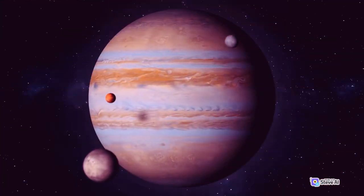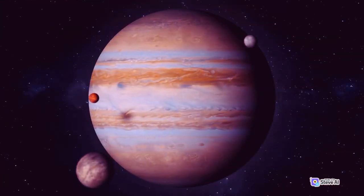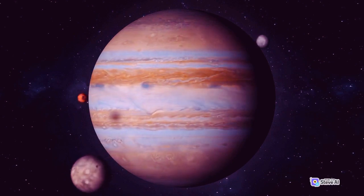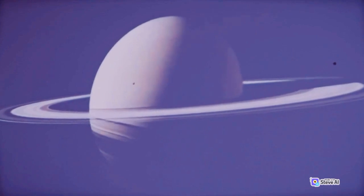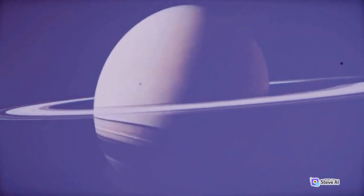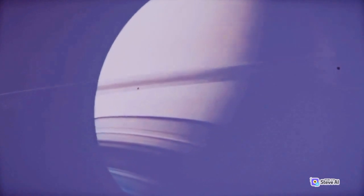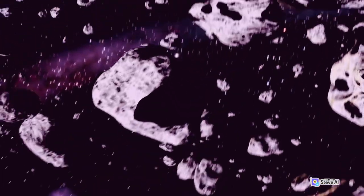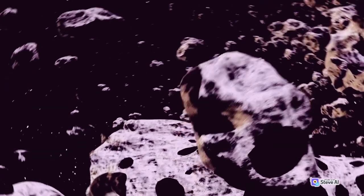Composition: Saturn is primarily made up of hydrogen and helium, similar to Jupiter. It has a dense core of rock and metal surrounded by layers of metallic hydrogen and molecular hydrogen. The atmosphere of Saturn is mostly hydrogen with traces of helium and other compounds.